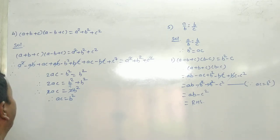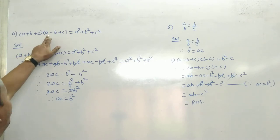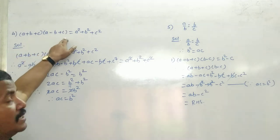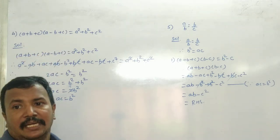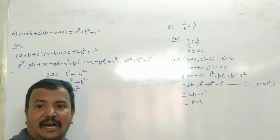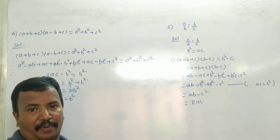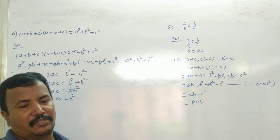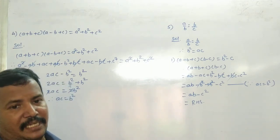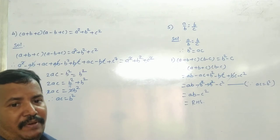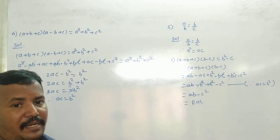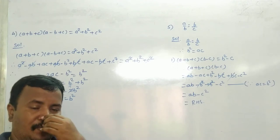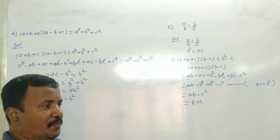क्या बता है कि (A + B + C)(A - B + C) is equal to A square plus B square plus C square, then हम लोगों को बताना है A, B, C are in continued proportion. मतलब B square is equal to AC — वही हम लोगों को प्रूफ करना है।